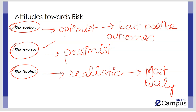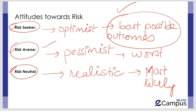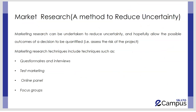To summarize: a risk seeker focuses on the best possible outcomes, risk averse focuses on worst outcomes, and risk neutral focuses on most likely outcomes. In order to reduce uncertainty while making a decision, the best way is through market research. Market research is a method to reduce uncertainty and allows the possible outcomes of a decision to be quantified — through calculation of probabilities.